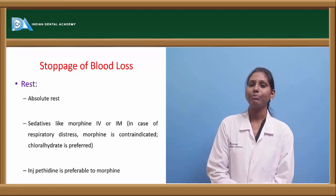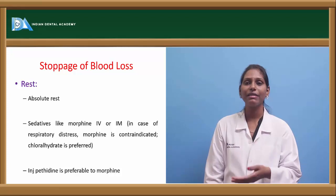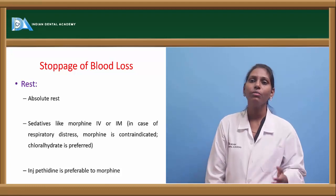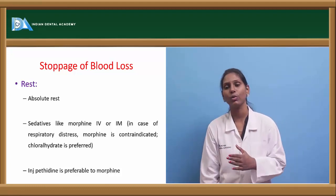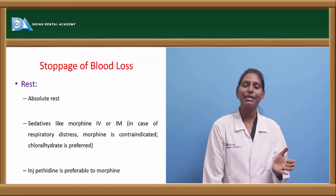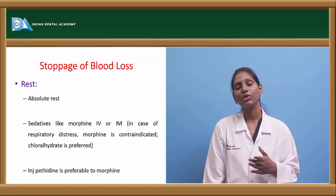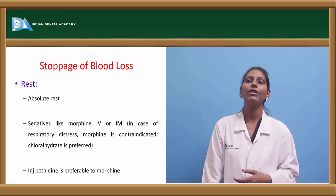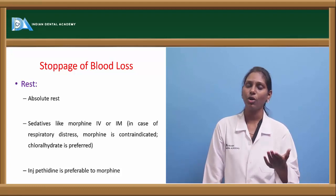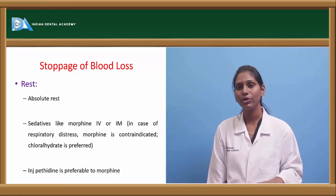The first step in stopping hemorrhage is rest — give rest to the hemorrhaging site and do not move the site of injury. Sedatives like morphine can be given IV or IM, but morphine is contraindicated in respiratory distress or head injuries. In those cases, chlorhydrate or injection pethidine is preferable, as these drugs help relieve pain and ensure absolute rest.